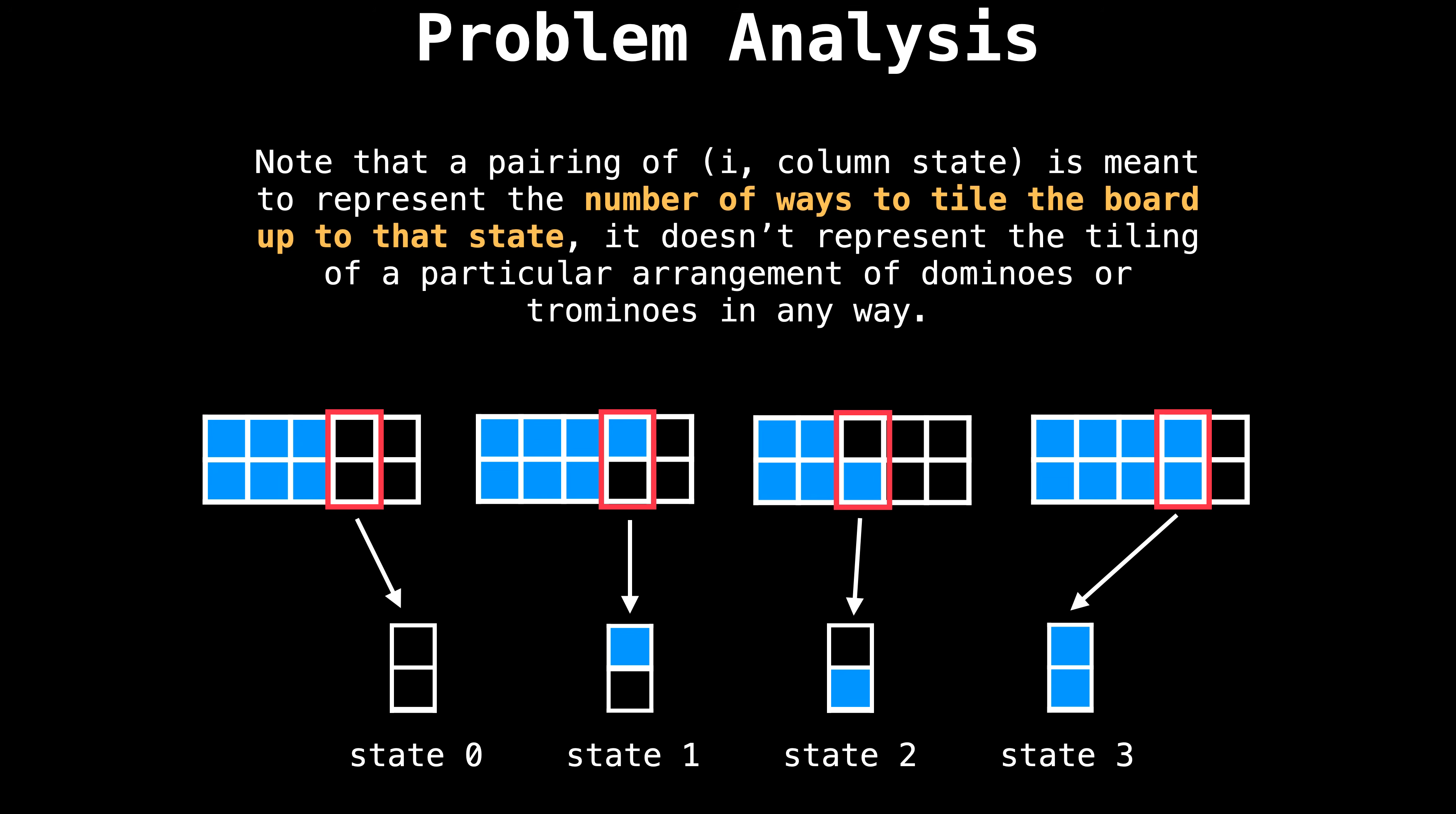I want to note that a pairing of index i and the column state is meant to represent the number of ways to tile the board up to that state. It doesn't represent the tiling of a particular arrangement of dominoes and trominoes in any way. This is contradictory to what you might think that the drawings below are trying to imply. Remember that the goal is to count the total number of ways to tile the grid.